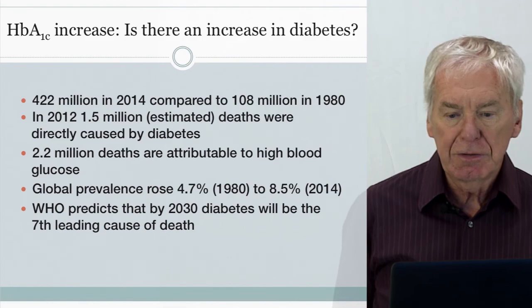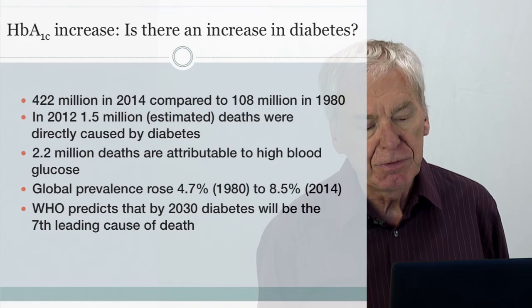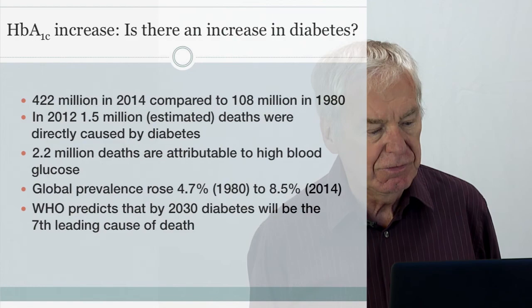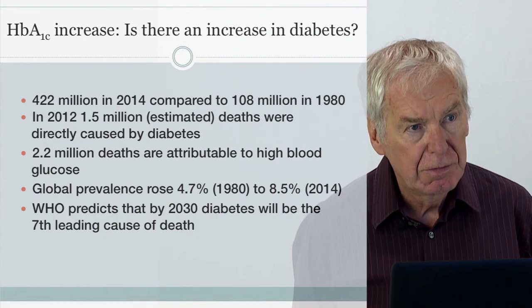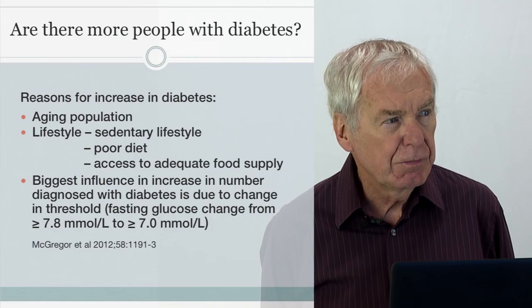Is there a tremendous increase in diabetes? Comparing 1980 with 2014, there is over a 300% increase in individuals diagnosed as diabetic. Global prevalence has risen from 4.7% in 1980 to 8.5% in 2014. The World Health Organization predicts that by 2030, diabetes will be the seventh leading cause of death in the world.